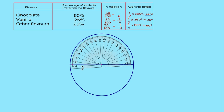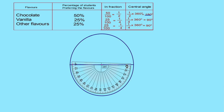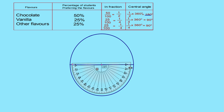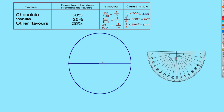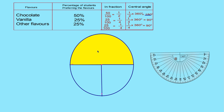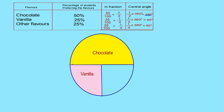For vanilla it is 90 degrees. We have to change the direction of the protractor and mark 90 degrees, then join it. The last remaining portion is also 90 degrees. Now we can color each sector.